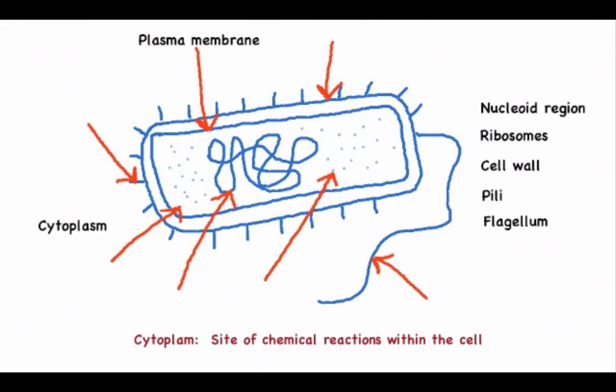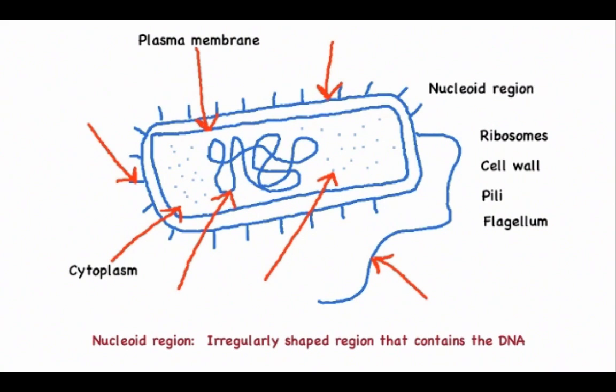The cytoplasm is the site of chemical reactions within the cell. Next we have the nucleoid region, an irregularly shaped region that contains the cell's DNA, usually in the form of a circular double-stranded piece of DNA.